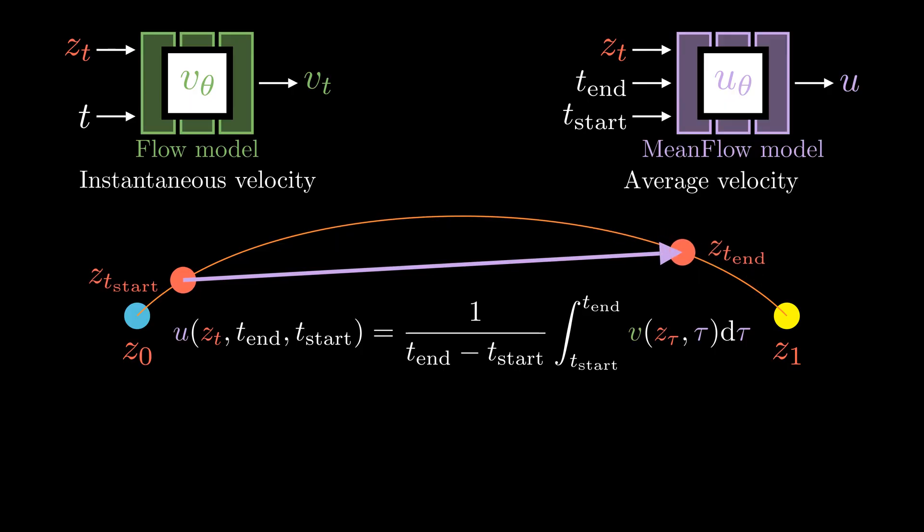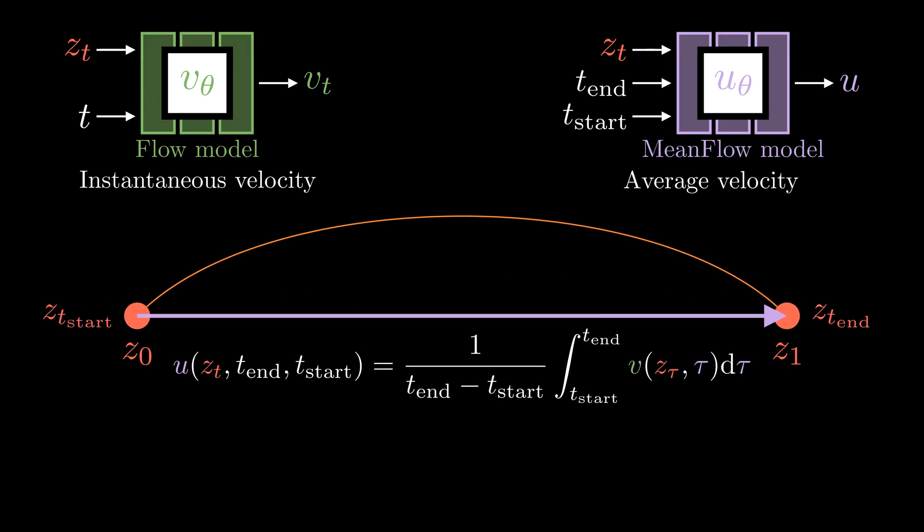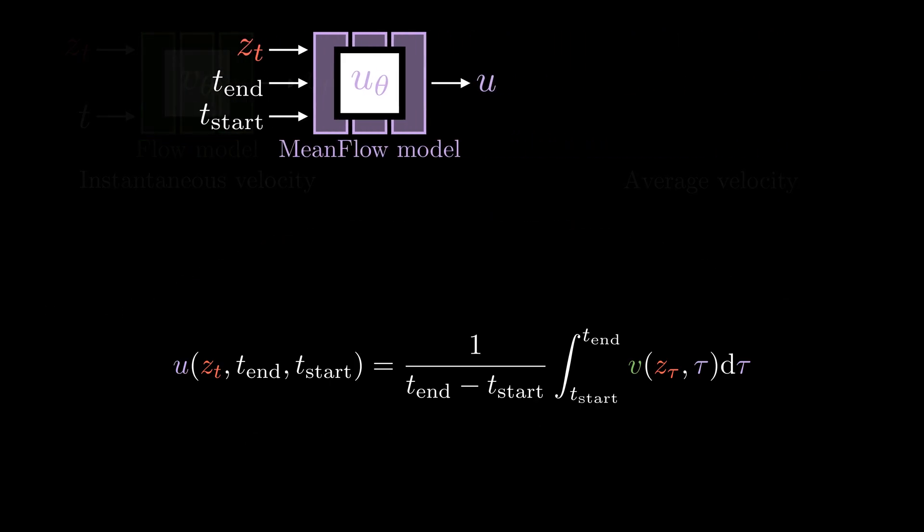Why is this useful? Suppose we have this model that predicts average velocity. We can query this model by setting zt as noise, t_start as 0, and t_end as 1. By definition, the mean flow model directly predicts the average velocity between the time interval. This allows us to generate data samples by running the neural network once. No need for iterative sampling.